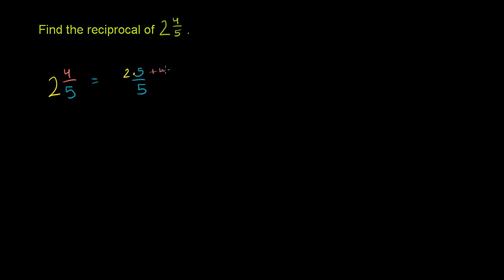2 times 5 is 10. 10 fifths is the same thing as 2. And then the 4 fifths is this 4 fifths right there. So this is going to be equal to 2 times 5 is 10, plus 4 is 14, 14 over 5.